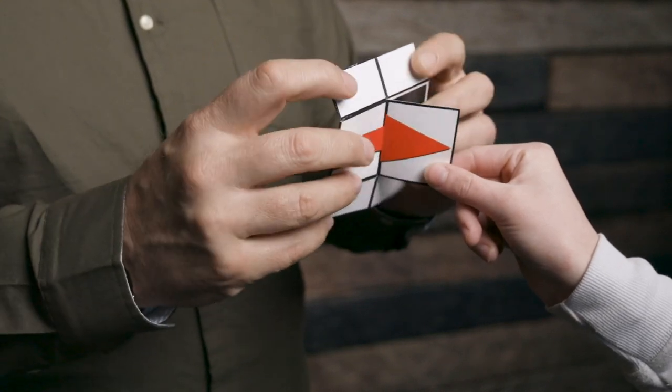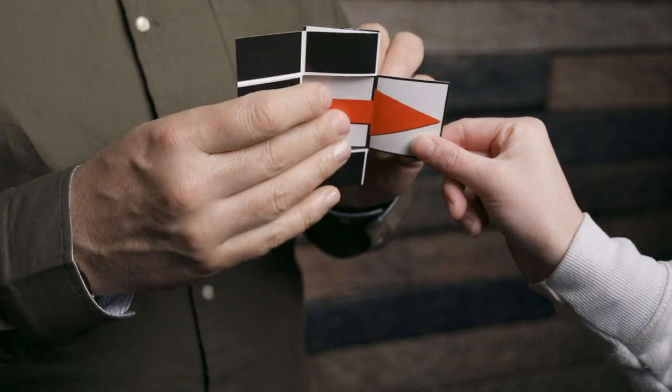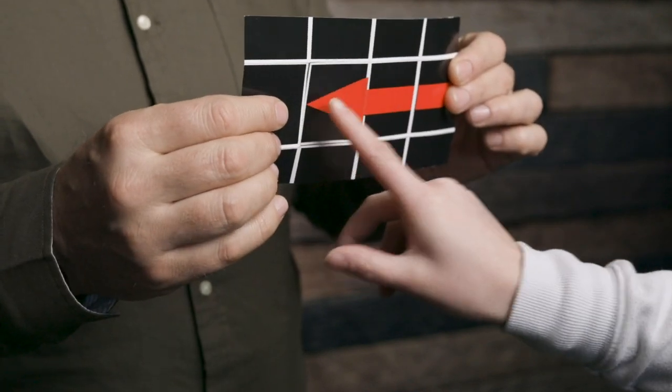In 1983, Bob Neill invented a topological mystery that allowed you to turn a card inside out in a spectator's hand. The concept caught magicians around the world by storm. It captured their imagination, but the one thing that it needed was a presentational hook.